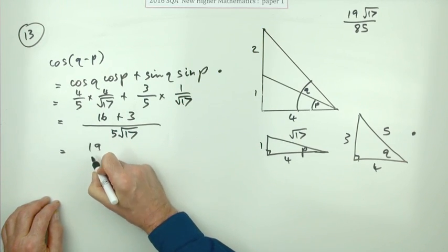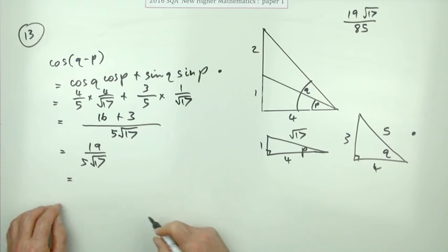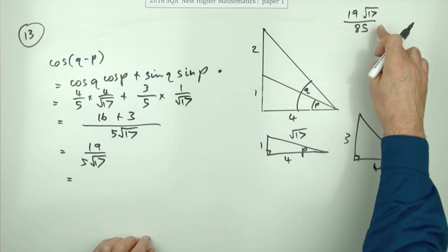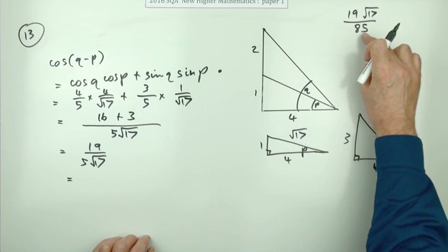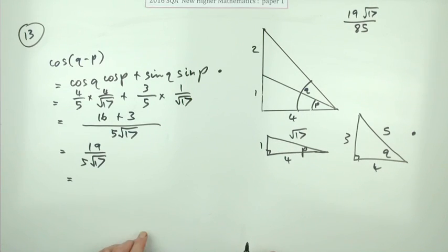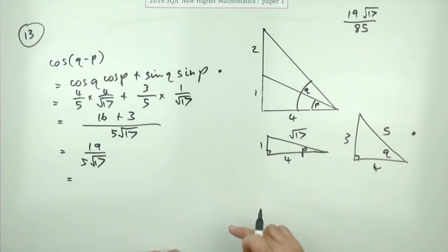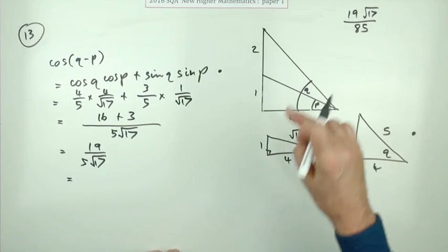So now you've got 19 over 5√17, and that's not written in this form. You can see the difference between them is the required answer has got a rational denominator. But again, don't just jump straight from there to there because you're meant to demonstrate this, and that would just look as if you just copied that down without knowing what to do.